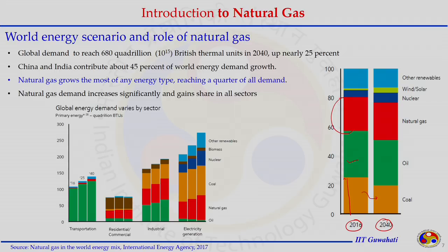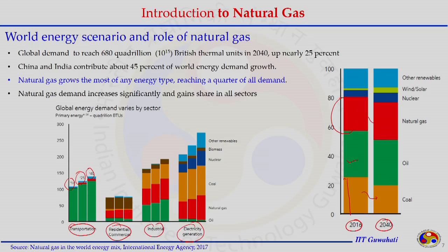Energy needs are classified across four major segments: transportation, residential, industry, and electricity generation. Oil still dominates transportation, while in Western countries like the USA, natural gas is used as a heating fuel for houses and buildings. For electricity generation, natural gas is going to dominate over coal because of its cleaner emissions.